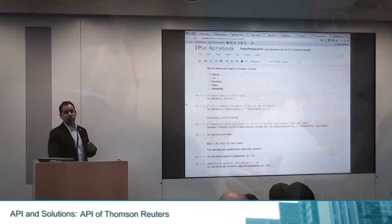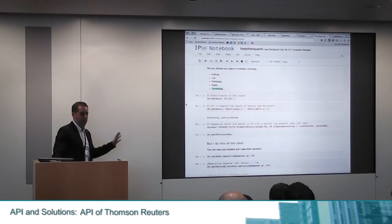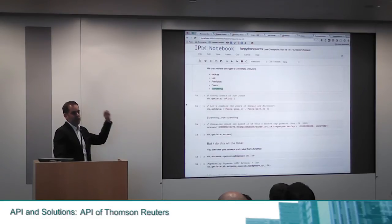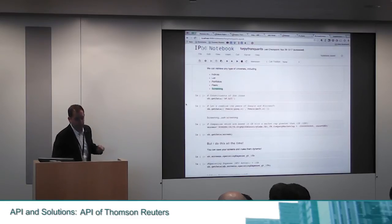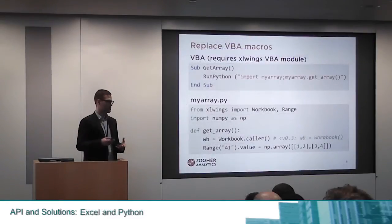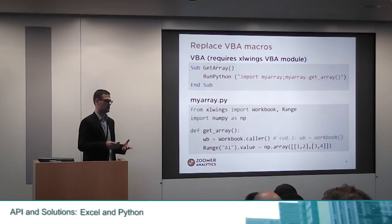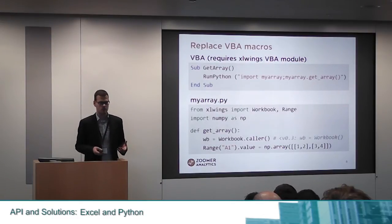It offers screening directly from the API. So I can pass all my screening parameters and execute that, and it's going to get me all the results at once, on the fly. There is also a way to not only access Excel from Python, but also to use Python as your macro language.